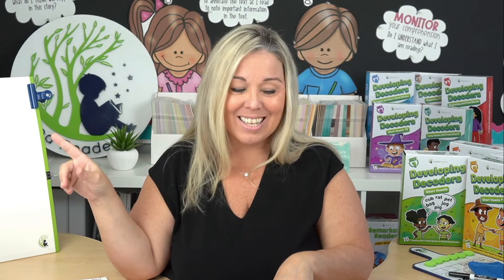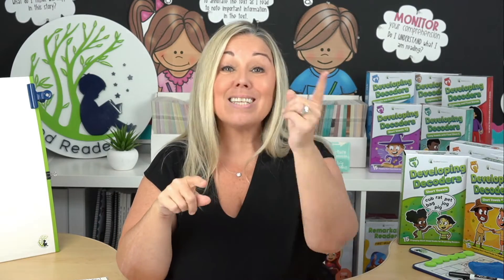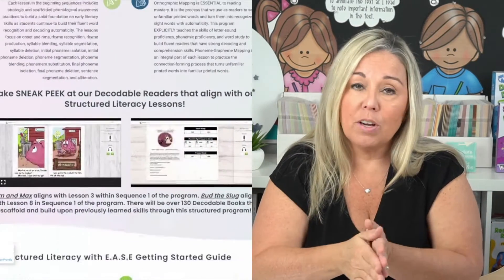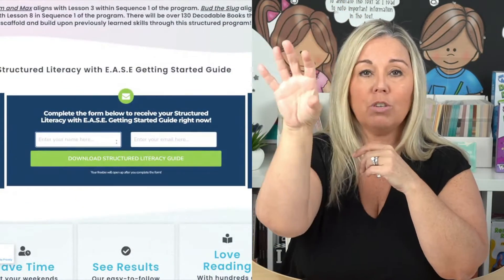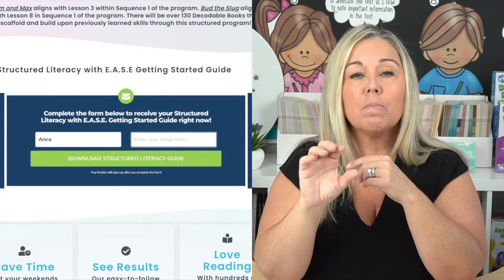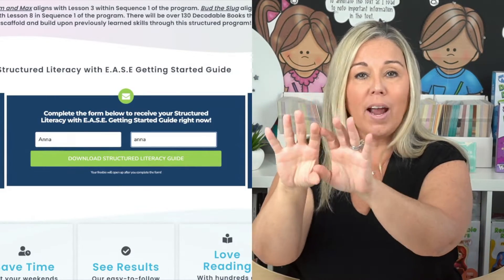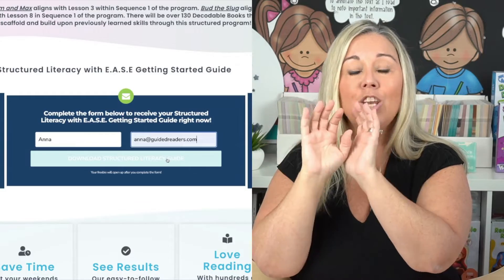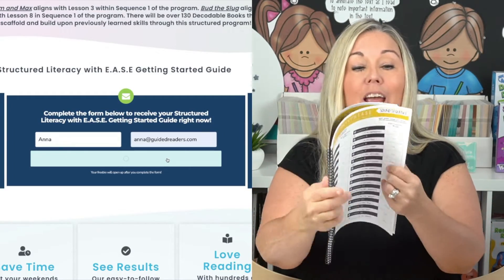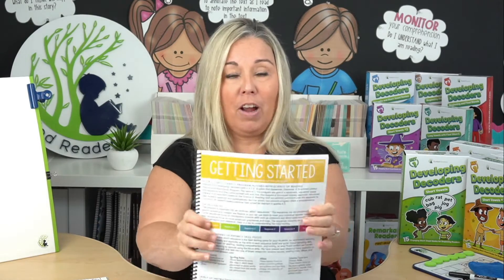In Structured Literacy with Ease, we start with the sound sequence — which introduces all 26 letters of the alphabet and their sounds. After the sound sequence, we move to the readiness sequence, which is about high frequency words. But we are not memorizing these words — and I'm going to get into that more in the next video. Head over to guidedreaders.com; the first part is all about our Structured Literacy with Ease program. Scroll down, put in your name and email, and download our entire scope and sequence for free.